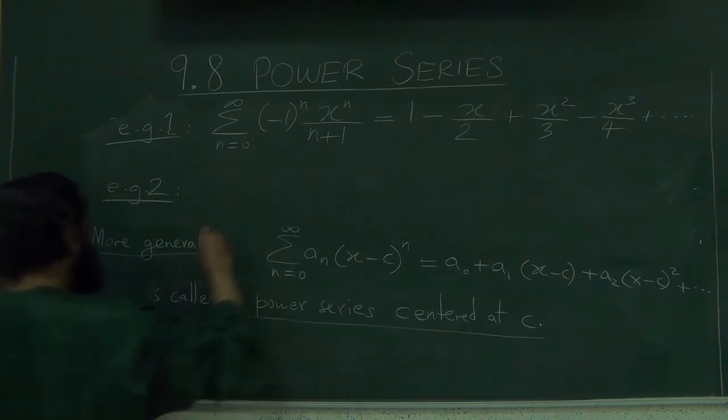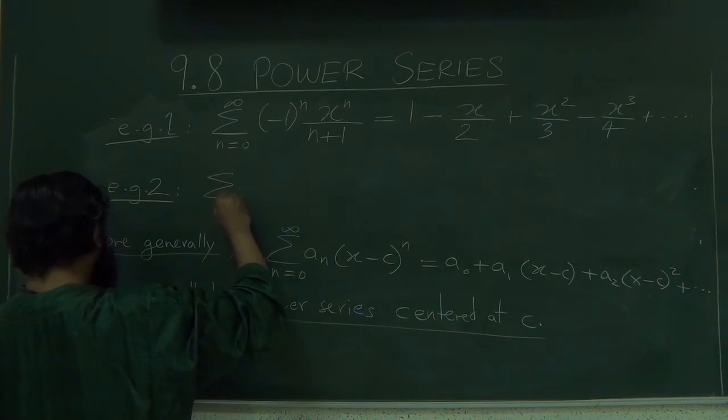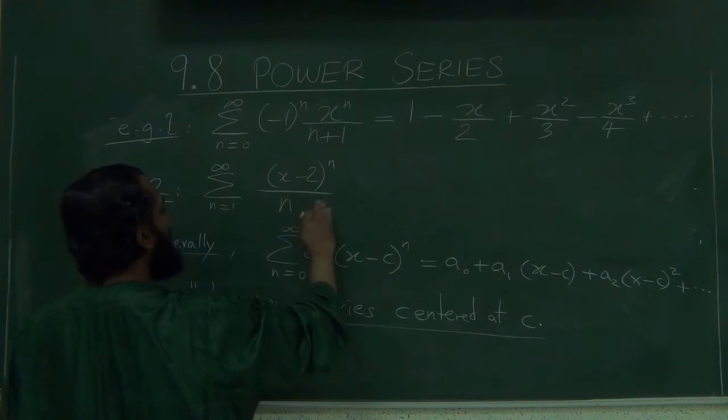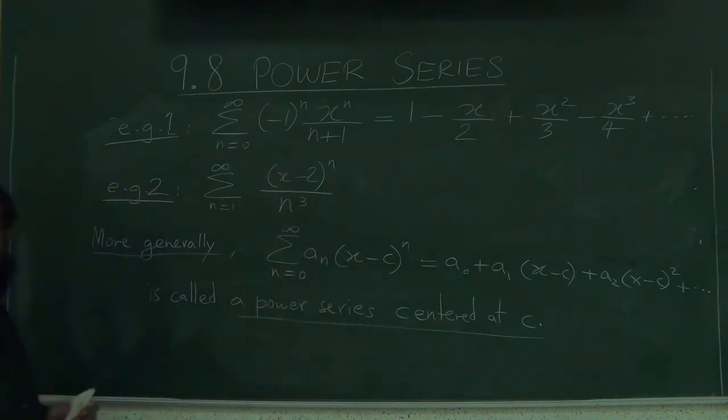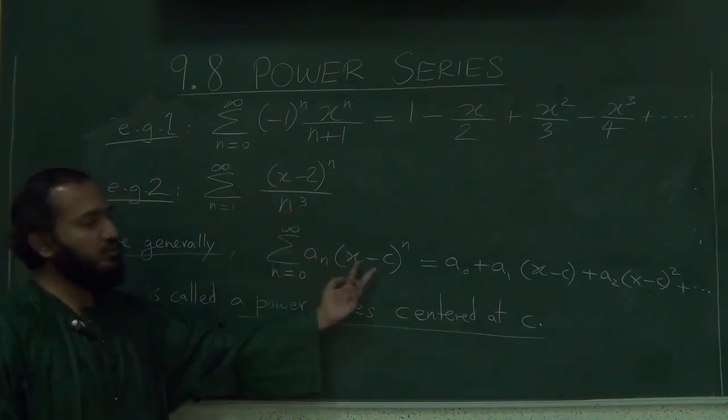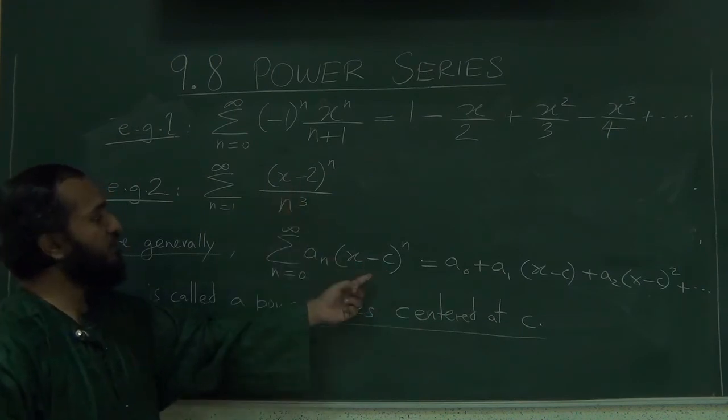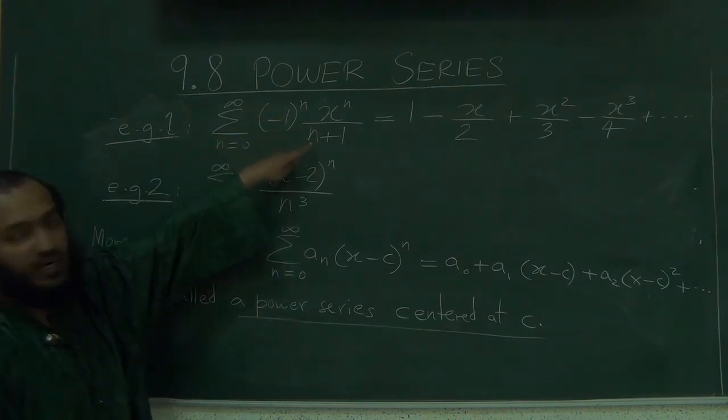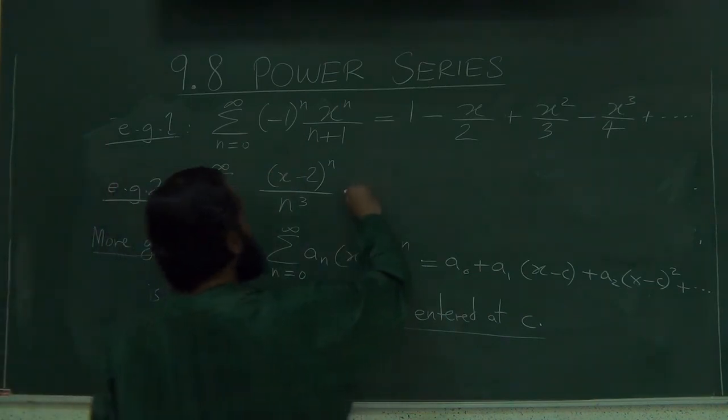Let's do another example, this time something centered somewhere else. So here, if you compare the form of this thing with the general form you see that the x minus 2 is the x minus C, so C is 2. And the a_n coefficient here is 1 over n cubed. Over here the a_n coefficient was negative 1 to the n over n plus 1.